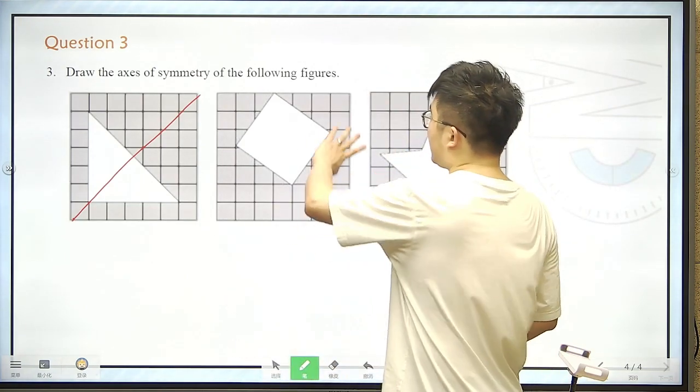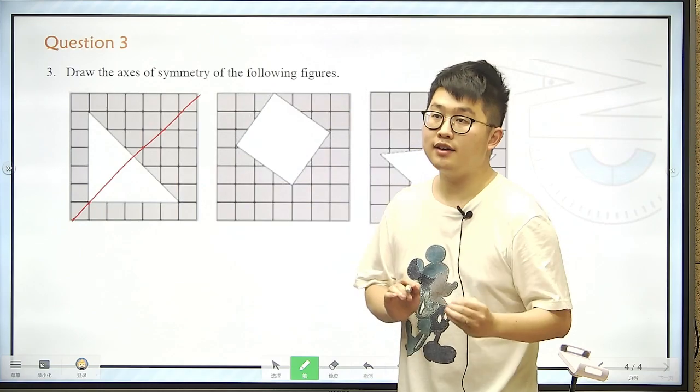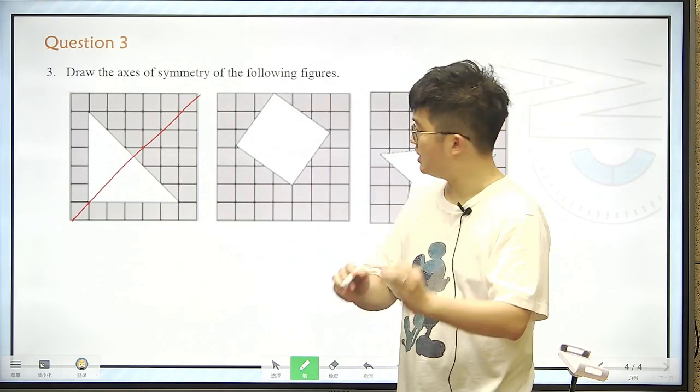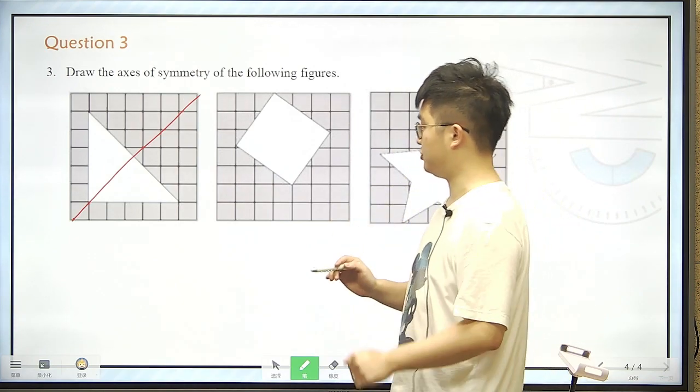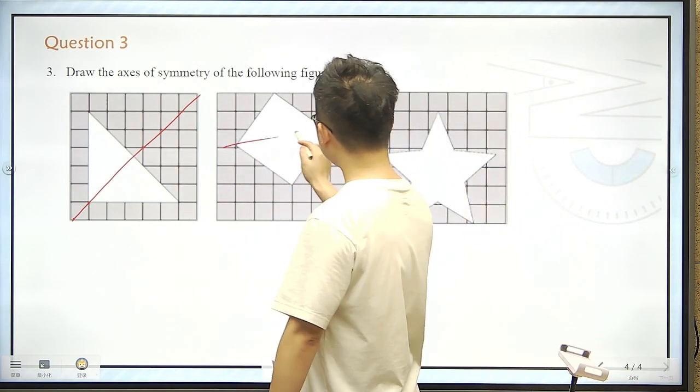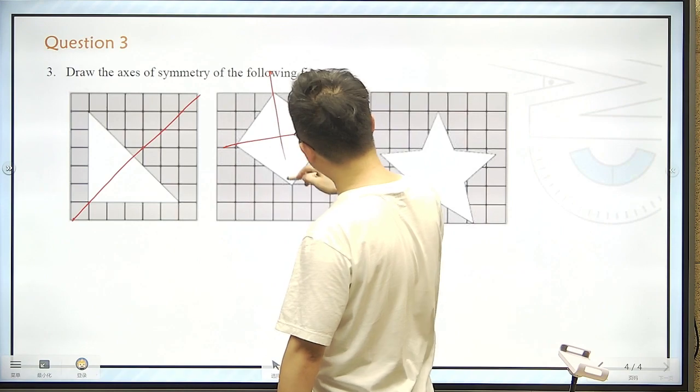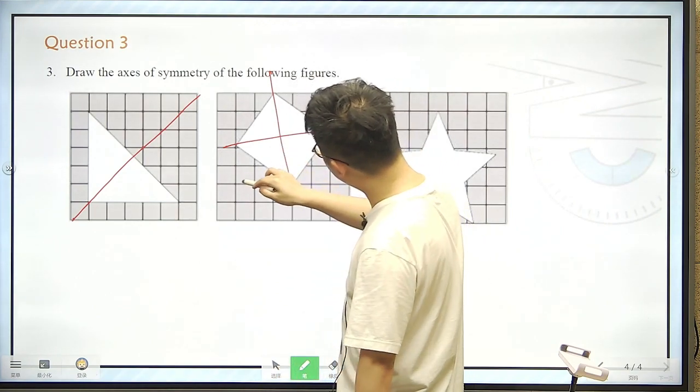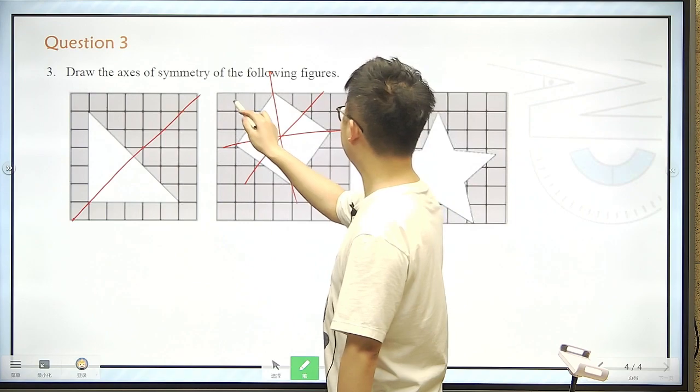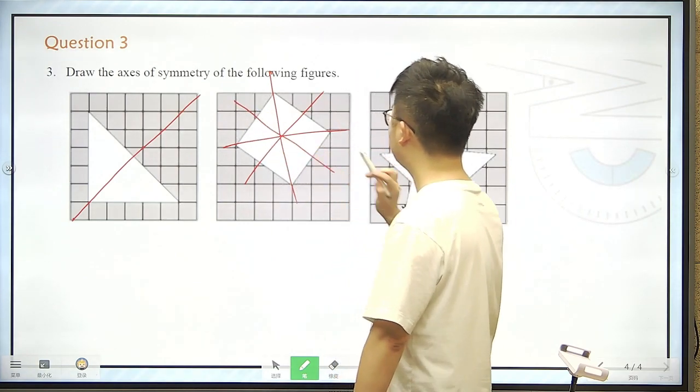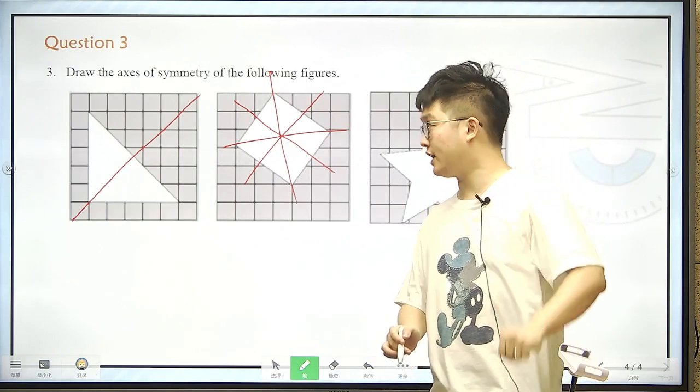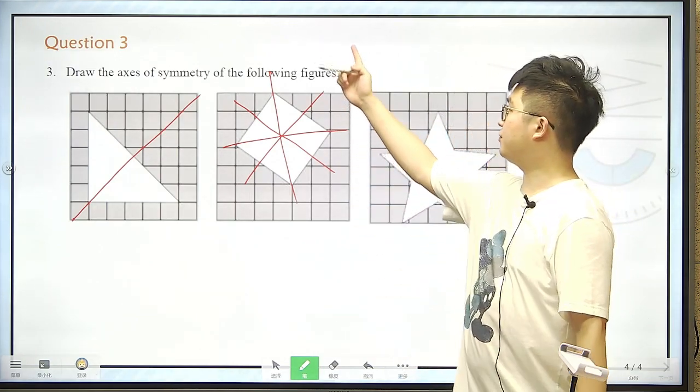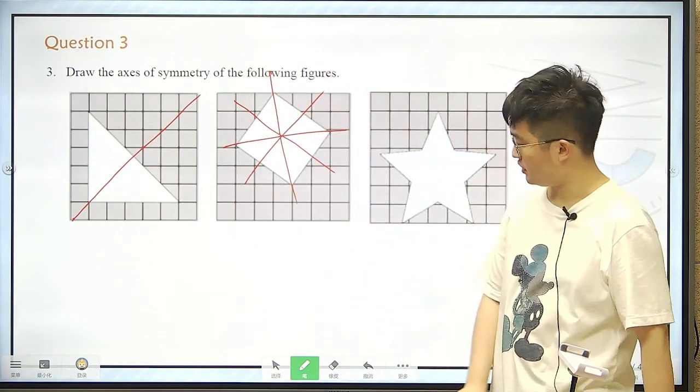And now here we have a square. We have a square. So it means there are many, in fact many axes of symmetry here. The first one like this, second one like this, and of course we know the third one just like this. So there are in fact four axes that satisfy these requirements.